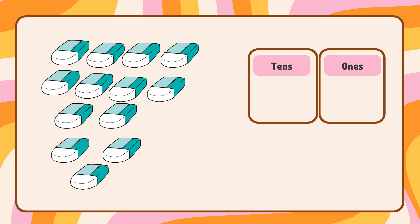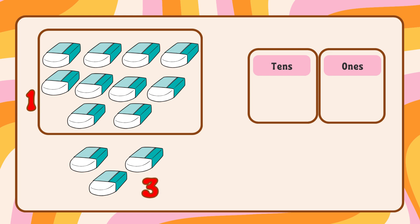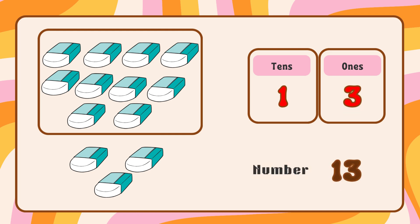Let's look at another object. Let's count them and group them in 10s and 1s place. 1, 2, 3, 4, 5, 6, 7, 8, 9, 10. We have 1 group of 10. Let's keep counting. 1, 2, 3. We have 3 ones. So in this we have 1 tens and 3 ones. And that's number 13.